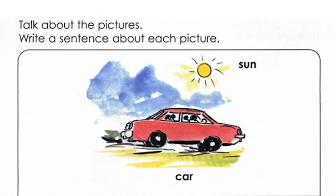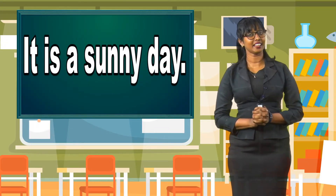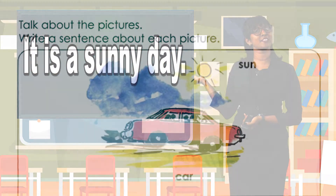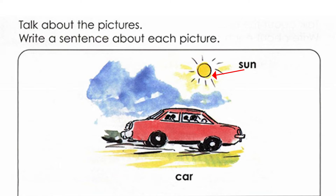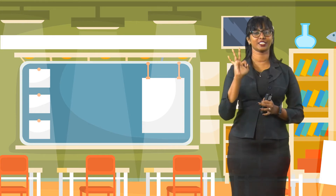In the picture, we can see a red car. And where do cars be? They are on the road. Now can you make two more sentences for me? You can make a sentence with Mr. Sun. We can say, it is a sunny day. We can say that because we see Mr. Sun in the picture. I hope you are writing.